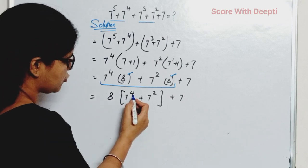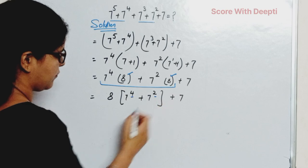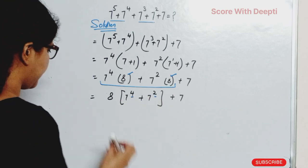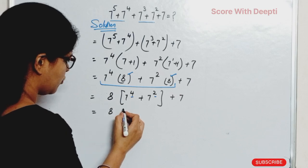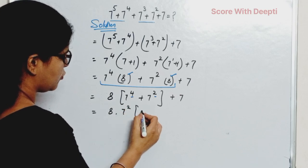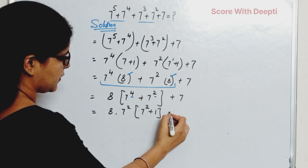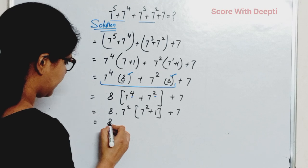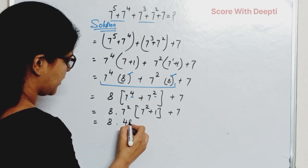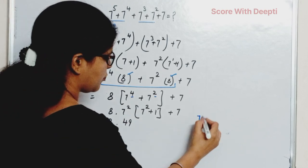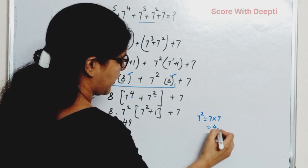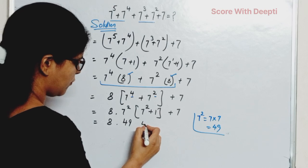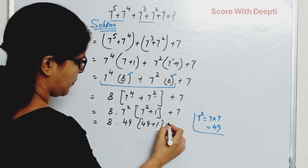Next, we solve this and get 8 * 7^2 * 49. 7^2 = 49 plus 7^2 * 49 plus 1 plus 7.